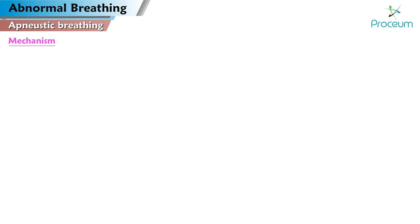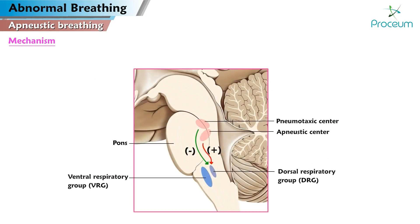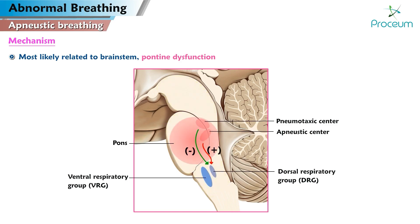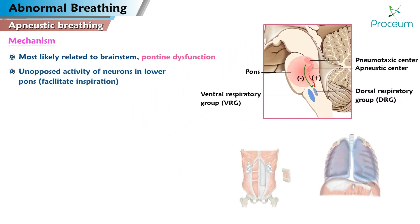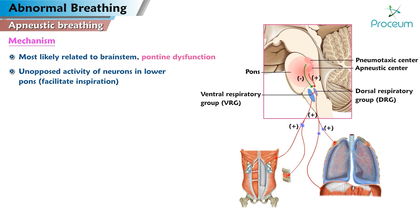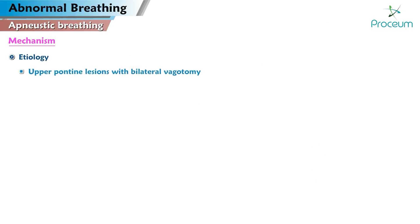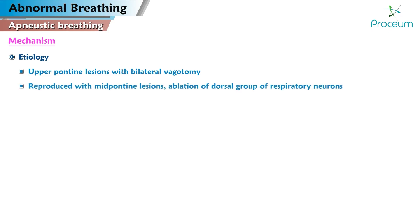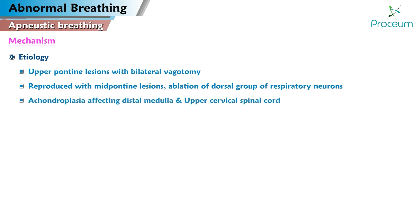Mechanism of apneistic breathing. The mechanism of apneuses is most likely related to brainstem and in particular pontine dysfunction. Apneistic breathing was believed to be caused by unopposed activity of the neurons in the lower pons, which facilitate inspiration. It is seen in patients with upper pontine lesions with bilateral vagotomy. However, more recent reports have shown that apneuses can be reproduced with mid-pontine lesions, ablation of the dorsal group of respiratory neurons, and achondroplasia affecting the distal medulla and upper cervical spinal cord. Additionally, apneistic breathing can be temporarily induced by ketamine.